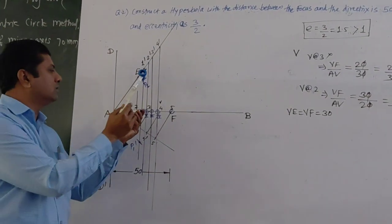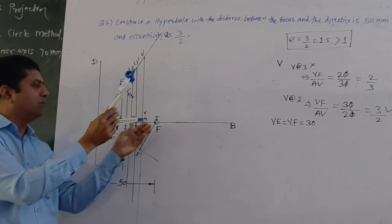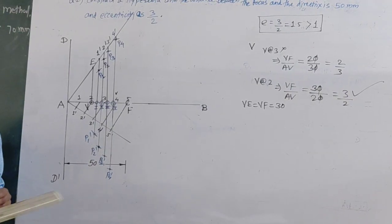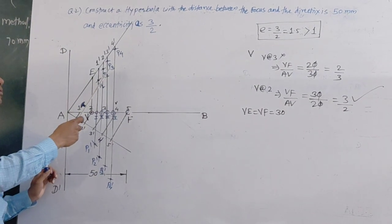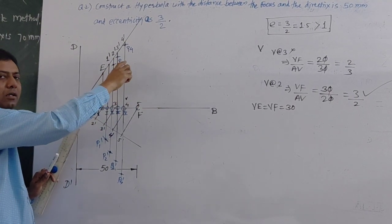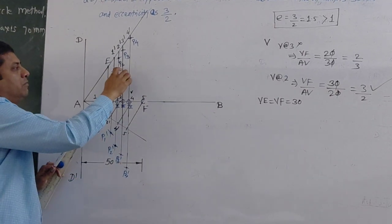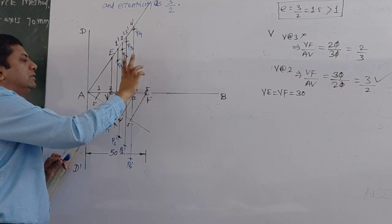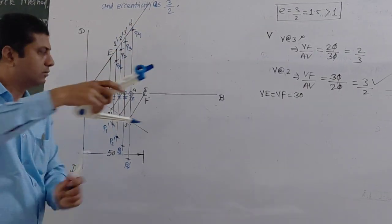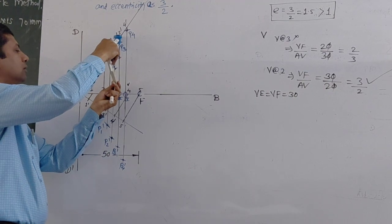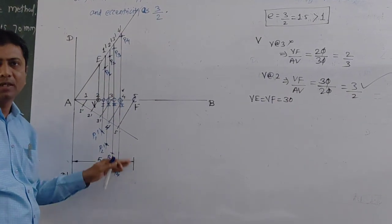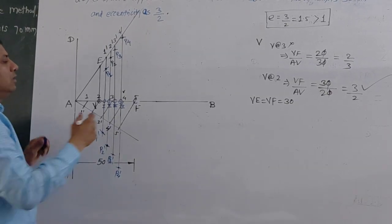Similarly, take the distance from 2 to 2', and with F as centre draw arcs at top and bottom — those will be points P2 and P2'. Take the distance from 3 to 3', and with F as centre draw arcs top and bottom to get P3 and P3'. Do the same for point 4 to get P4 and P4'.